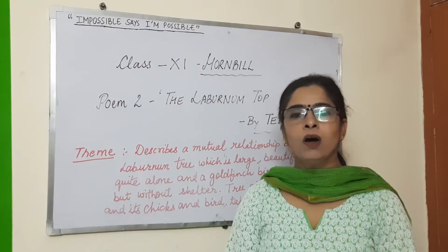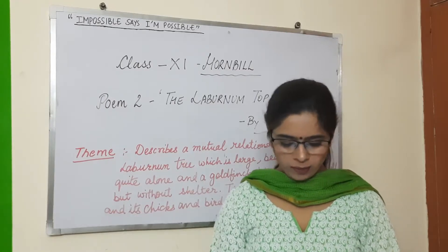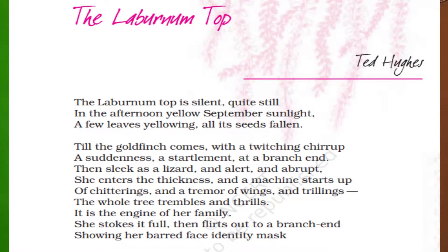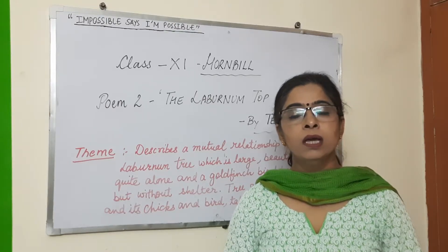Without wasting our time, let's start the poetry. 'The laburnum top is silent, quite still, in the afternoon yellow September sunlight, a few leaves yellowing, all its seeds fallen.' Now, what do we know about our poet's opening?